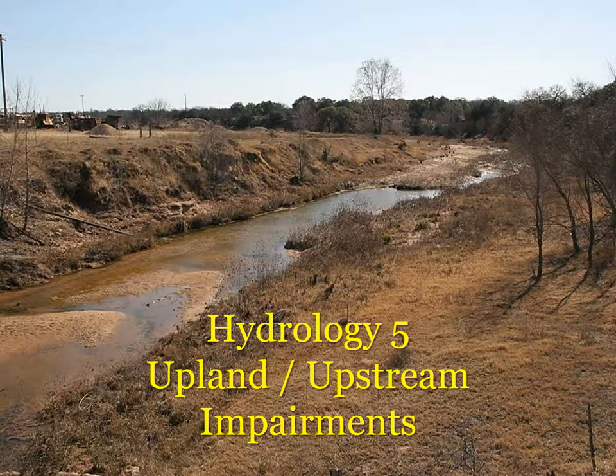The last item under hydrology, item five, has to do with whether or not there are any impairments in the riparian area that can be traced to disturbances in the upland or something upstream — such as gravel or caliche mining or construction delivering abnormal amounts of sediment to the channel. You're looking at what is happening upstream and in the contributing watershed that might be impairing the riparian area.